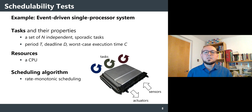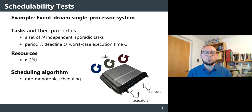As a concrete example, consider an event-driven single processor system seen as a set of N independent sporadic tasks, characterized by their period or minimum inter-activation interval, the deadline by which they must finish, and the worst-case execution time when using the resource alone. Resources consist of a single CPU, and tasks are scheduled according to rate monotonic scheduling, where tasks with smaller periods have higher priority.